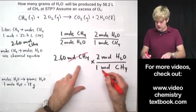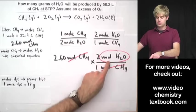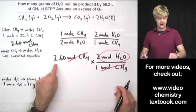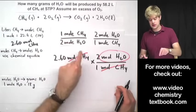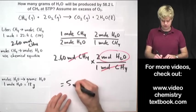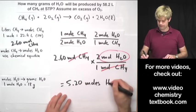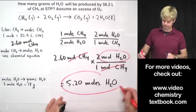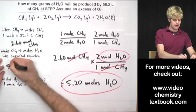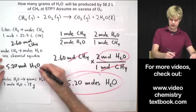Moles of CH4 up here cancel out with the moles of CH4 down here and I'm left with moles of water which is exactly what I want for my answer. This is pretty easy math. It's going to be 2.6 times 2 divided by 1 and I'm going to get 5.20 moles of H2O. That's the answer to my second step. Now I know that I have 5.20 moles of H2O.